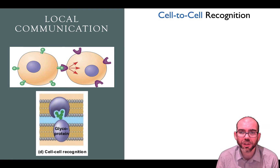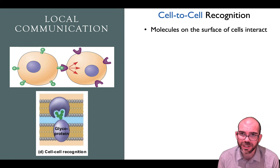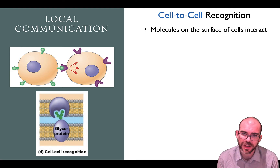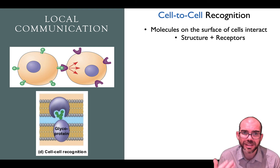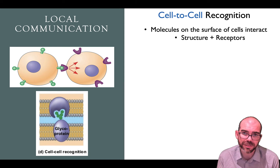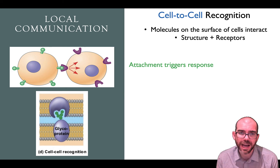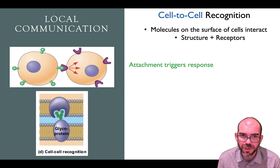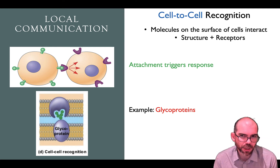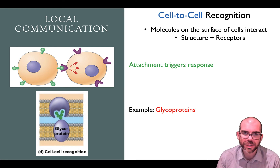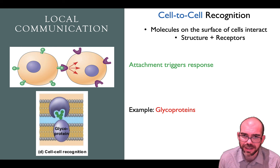Another way of doing local communication is cell-to-cell recognition. This is when molecules on the surface of a cell interact with molecules on the surface of another cell — typically some kind of structure interacting with a receptor on the receiving cell. These are typically glycoproteins: sugars attached to proteins on the outside of cells. This is how cells can recognize each other.